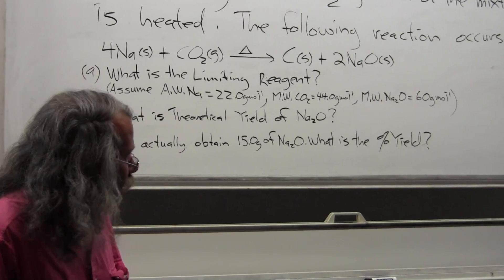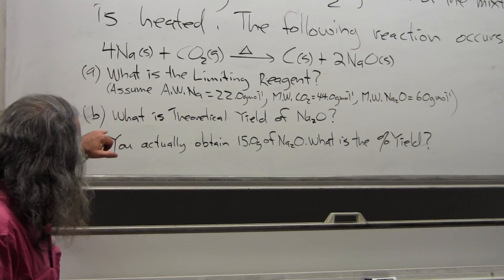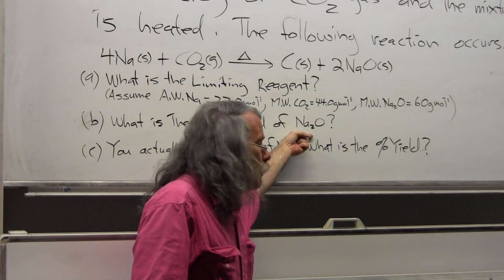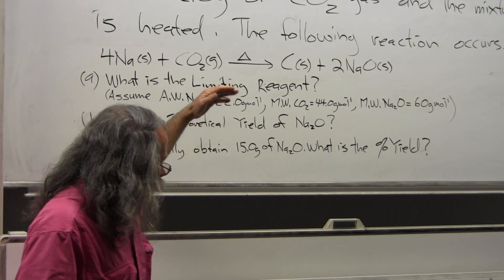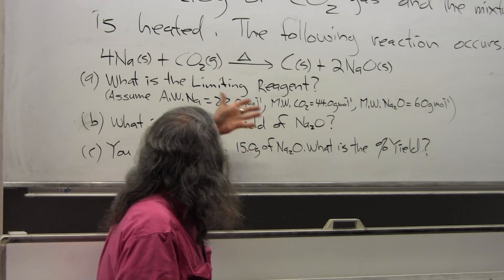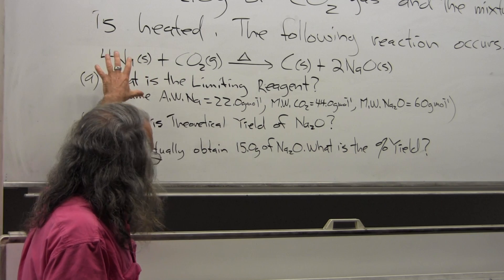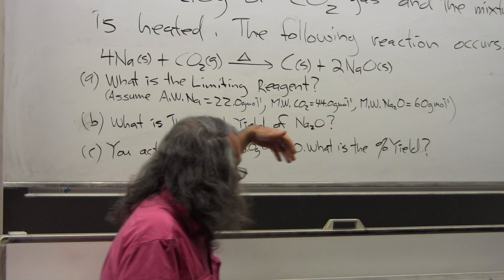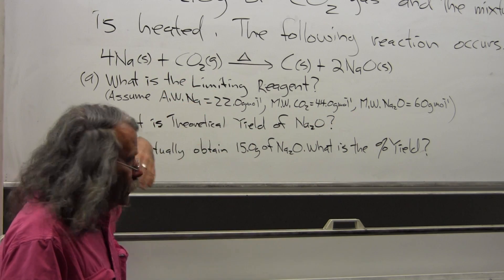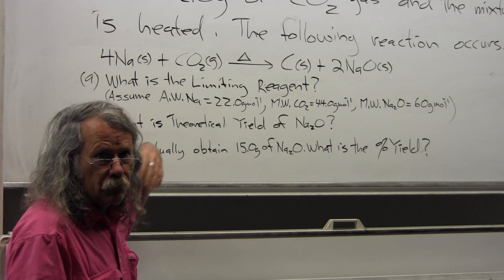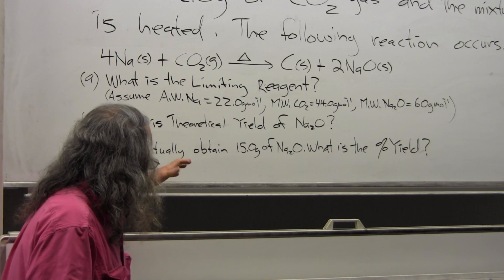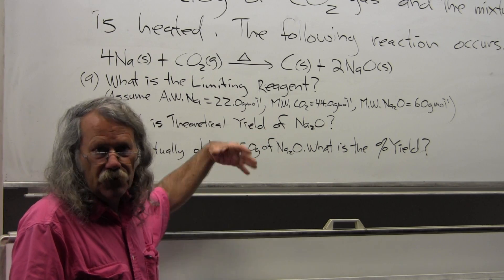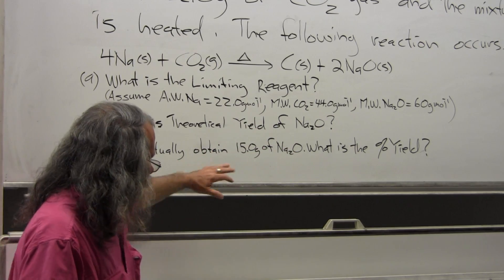Before we go further, it's a good idea to look ahead to part B: what is the theoretical yield of sodium oxide? We're going to take this into account when solving part A and cast everything in terms of the sodium oxide product. This will do the heavy lifting in part A and make part B much simpler. Part C is about percent yield, which will be on the sodium oxide.